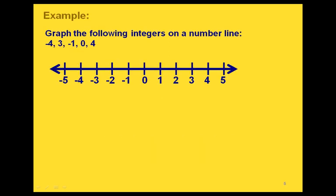Let's graph some of these integers on the number line. Negative 4 would be right here. 3, or as we could call it, positive 3, is here. Then negative 1, 0, and 4, or positive 4.